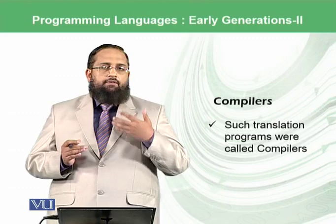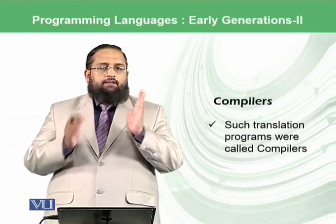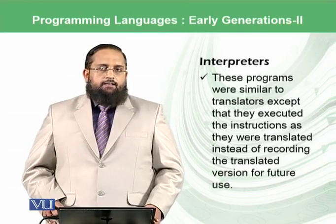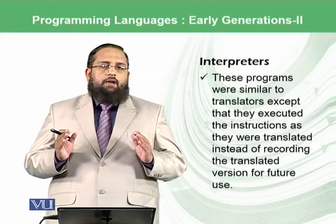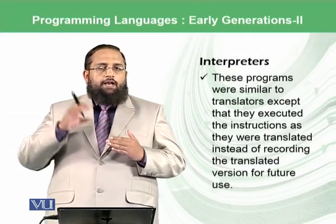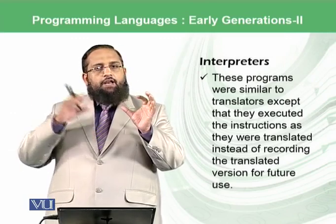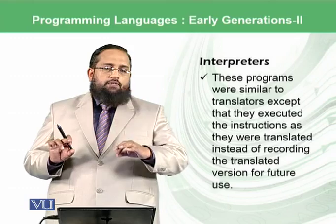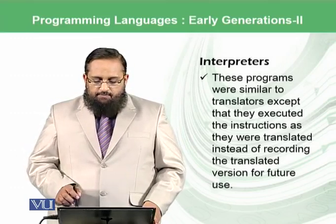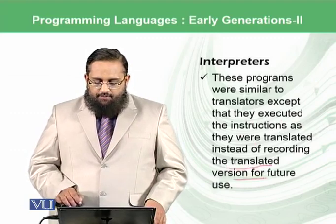A compiler tries to understand what the user has written in a language closer to natural language, checks that it is correctly written, and then translates it into machine language. Interpreters work differently: a compiler first translates all of the code into machine language and then executes it, whereas an interpreter translates one instruction into machine language and executes it, then moves to the next instruction. Interpreters execute instructions as they are translated, instead of recording the translated version for future use.